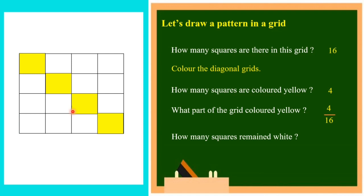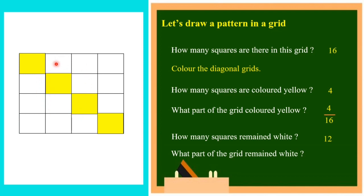How many squares remained white? Counting 1 through 12 — that means totally 16 squares were there and out of 16 squares, 4 squares are colored, so 12 squares remain white. What part of the grid remained white? Totally there are 16 equal squares and out of 16 equal squares, 12 remained white. So we can say 12 parts out of 16 equal parts, that is 12 by 16. So 4 by 16 yellow and 12 by 16 white — this is a pattern in the grid.